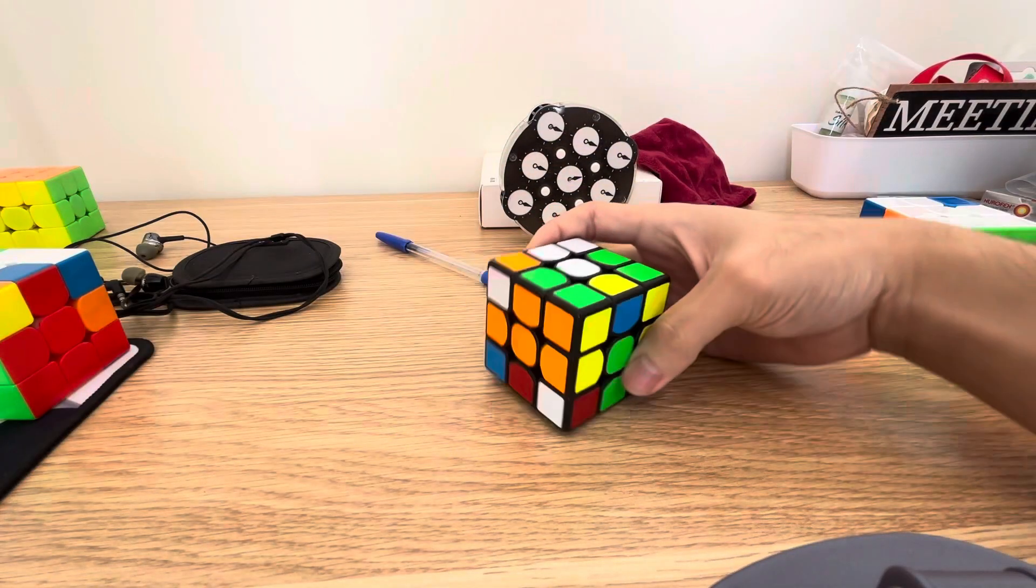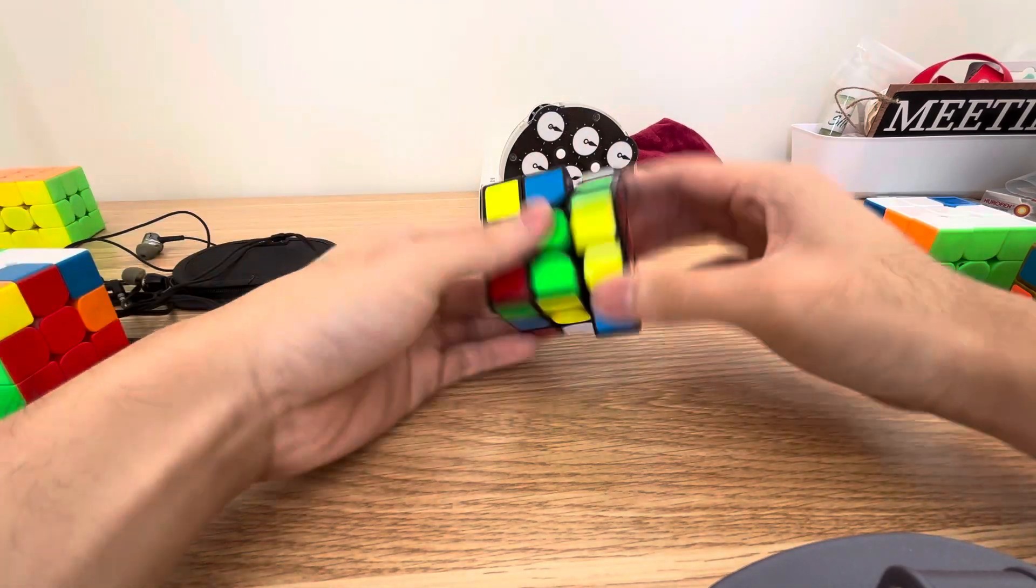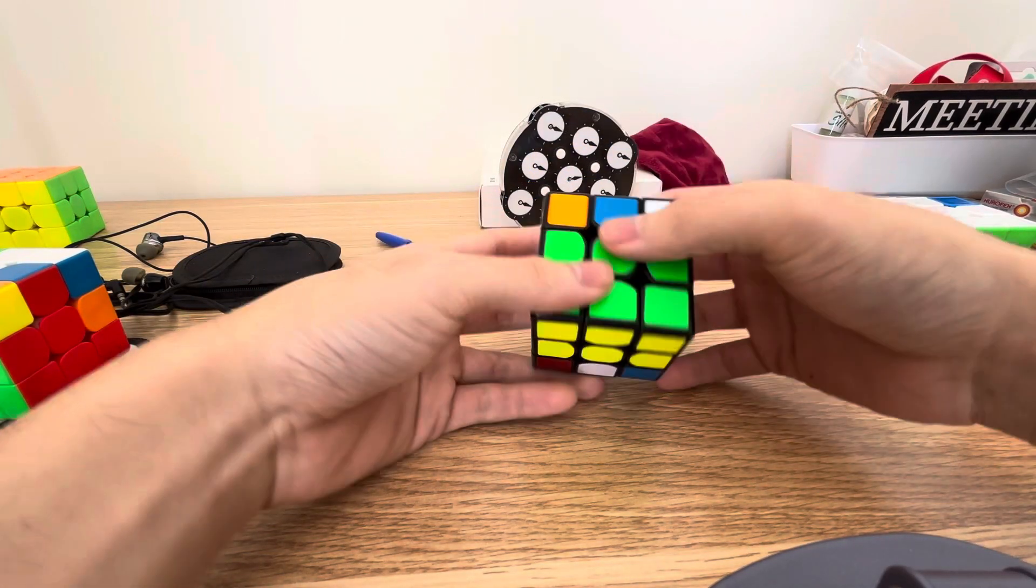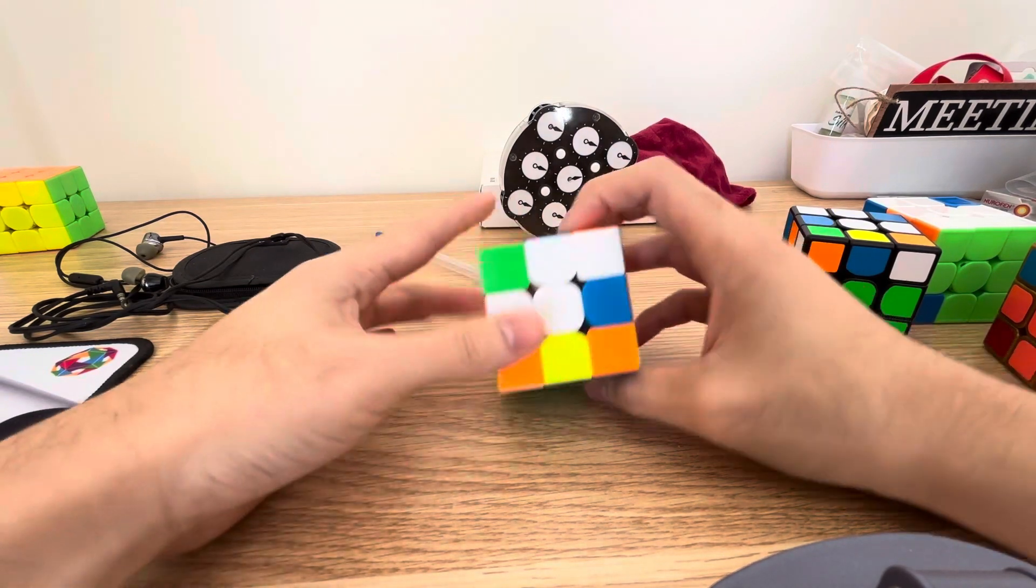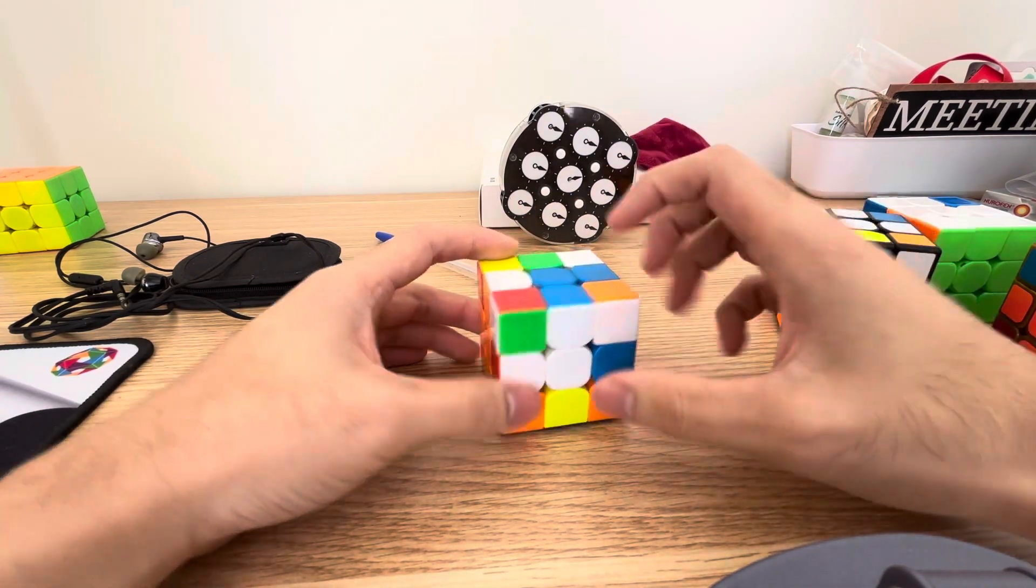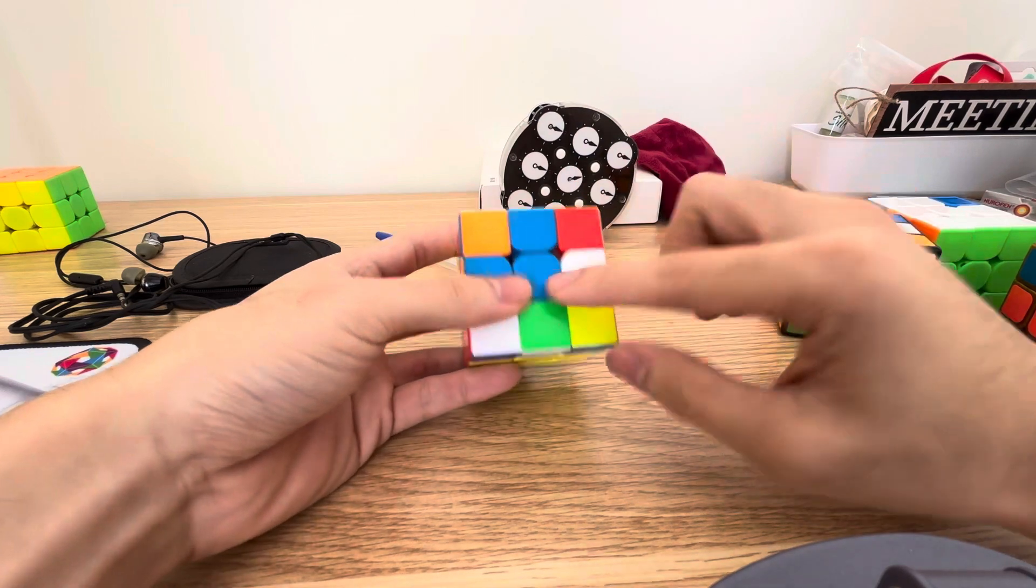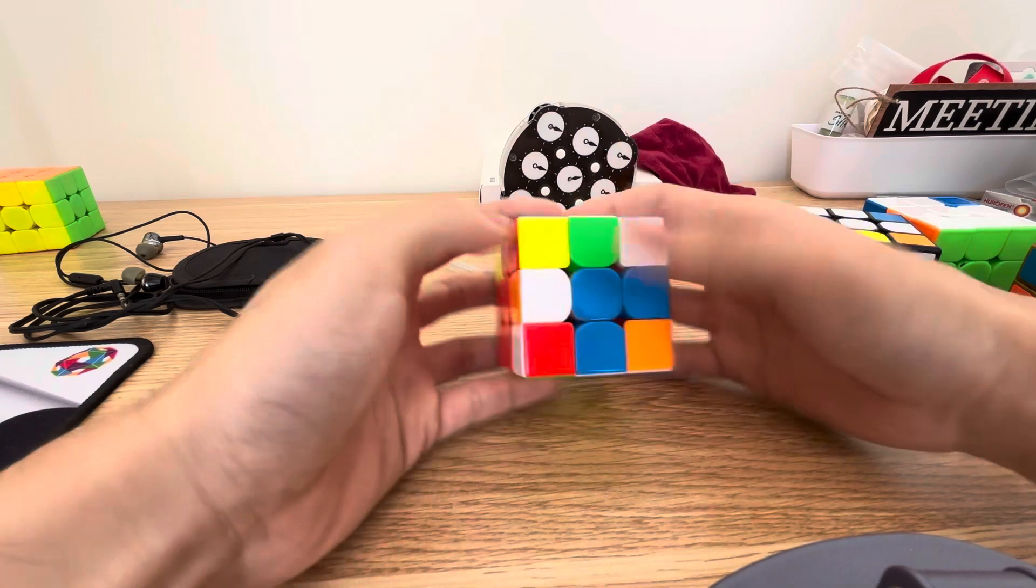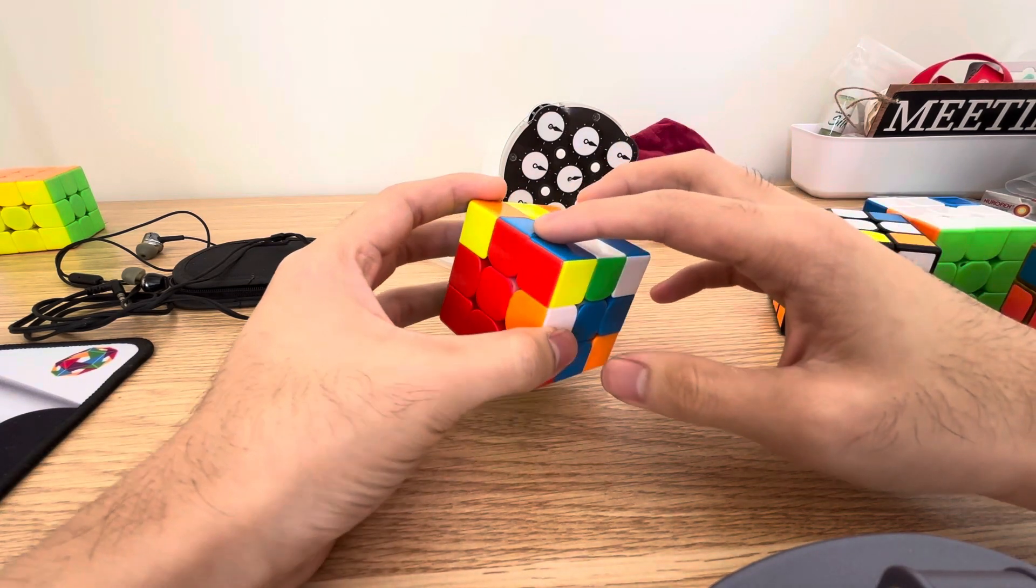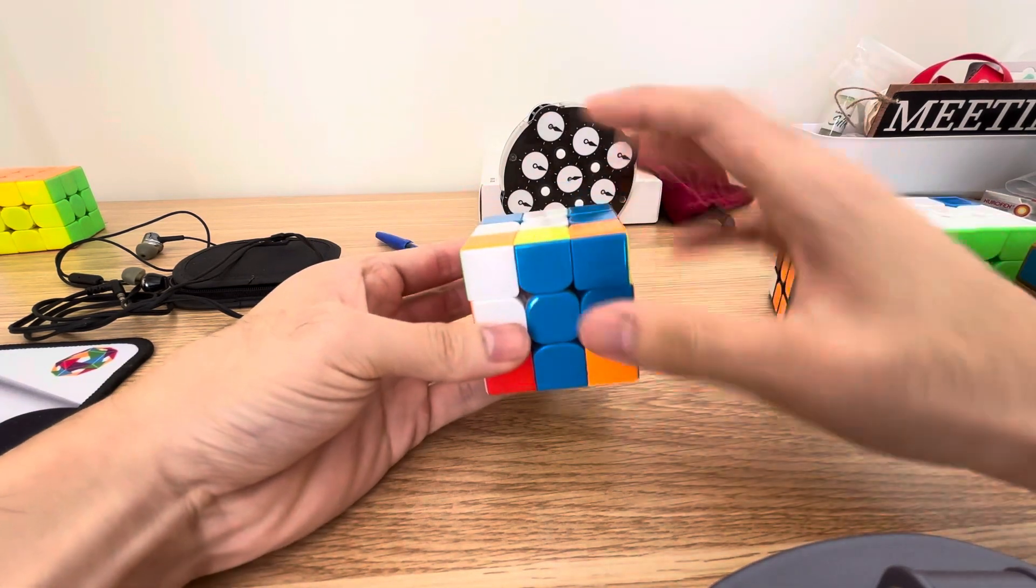I switch over to the inverse, just as I expected, I can solve this block within 2 moves, so that's 11 moves already. Then I switch back to the normal. Now I know I did EO on white, but the green EO just happened to be solved as well. So I go B2 to pair this up,